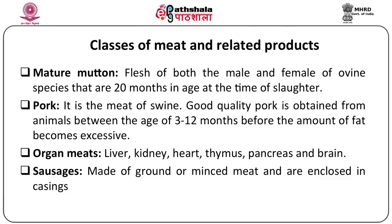Organ meats also come under the class of meat. Organ meats include the liver, kidney, heart, thymus, pancreas and brain. Sausages are products obtained from meat made of ground or minced meat enclosed in casings.